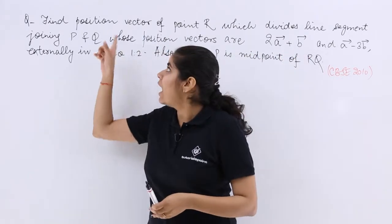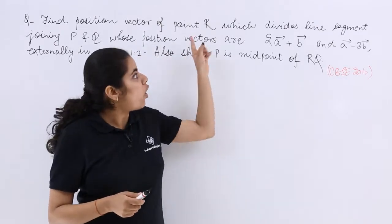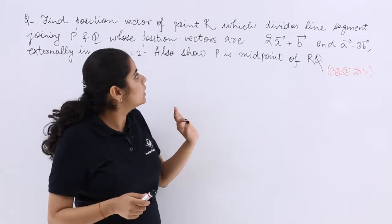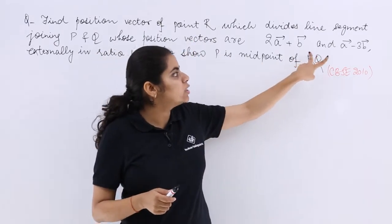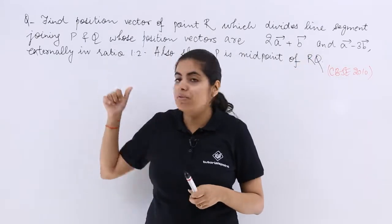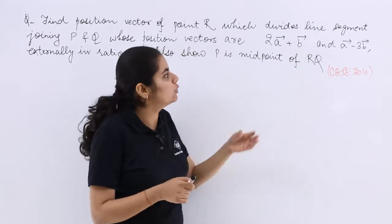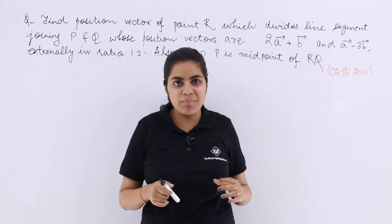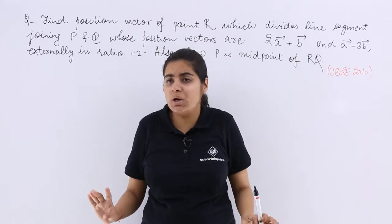First of all, what do I need to find? I need to find the position vector of a point R given that there is a line segment PQ with position vectors 2A plus B and A minus 3B. But the question is not over yet.